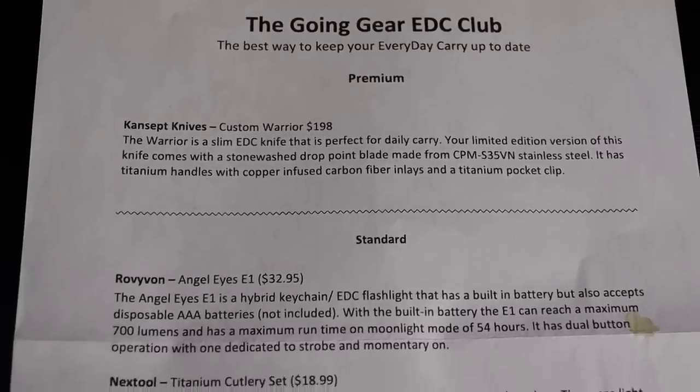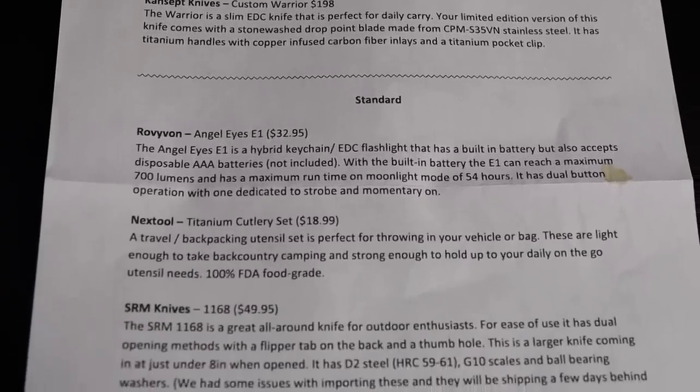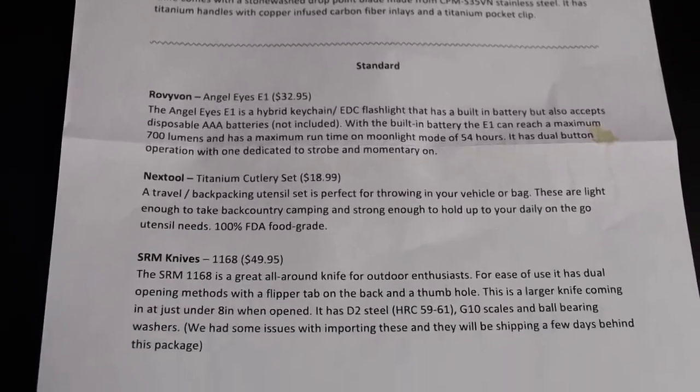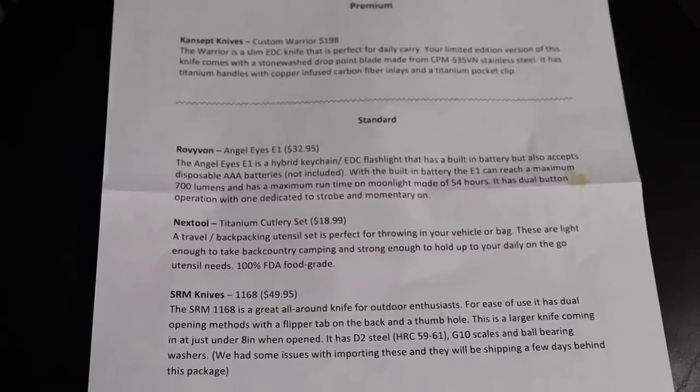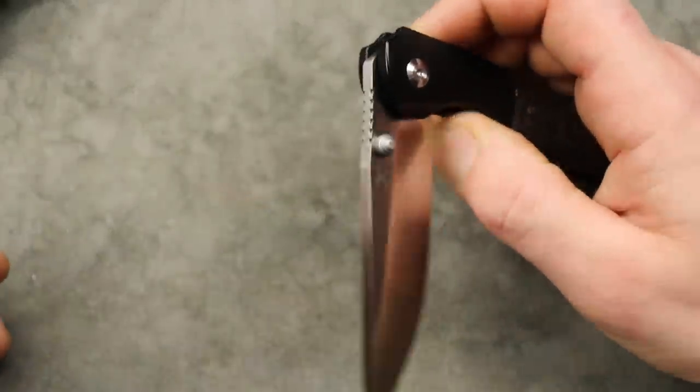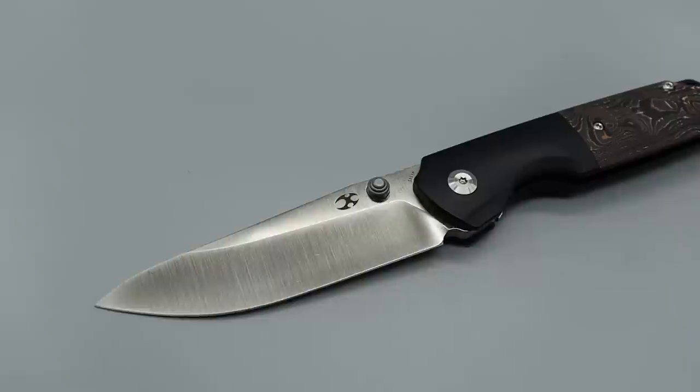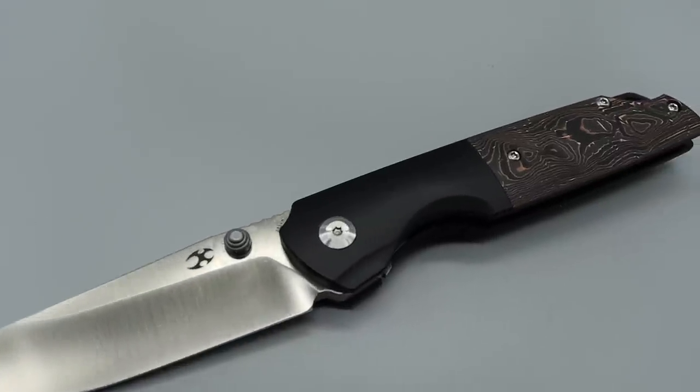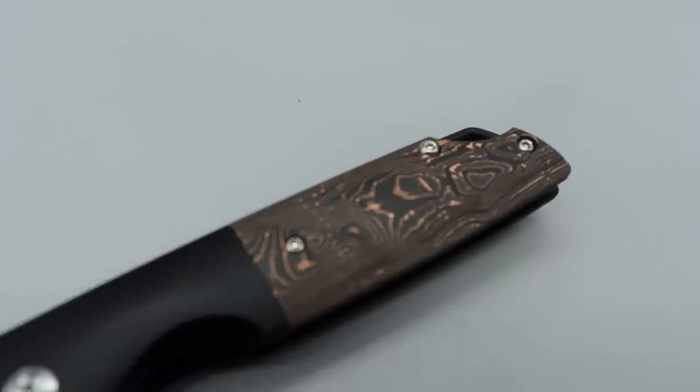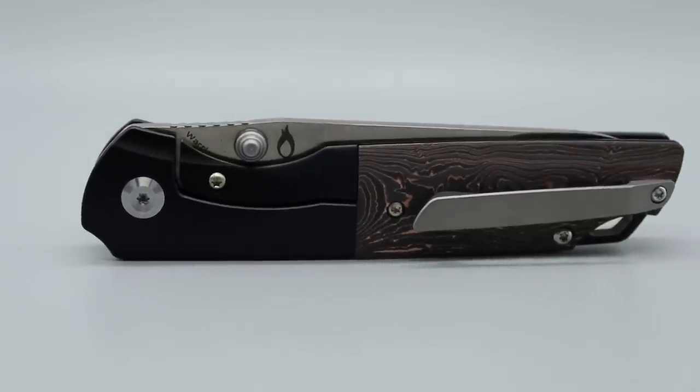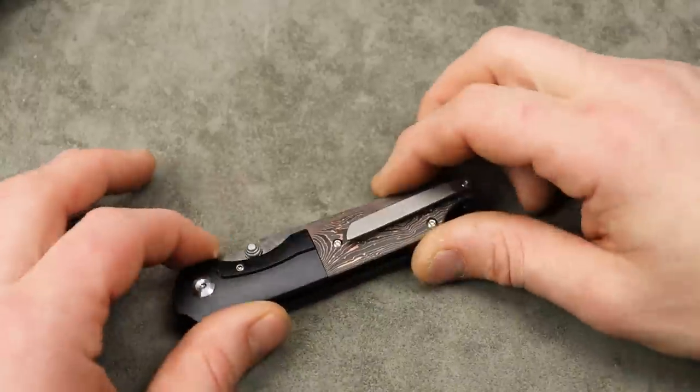So there you guys go. There is the EDC club box. Like I said, everything will be linked down in the description. If you want to get yourself EDC gear on a monthly basis, which is pretty cool because you don't pick what you want. So it just randomly shows up. So you're going to get things that you might not have thought you'd like, or maybe you'll get things you don't like, but you'll at least get to try things that you probably wouldn't have ordered. Otherwise, maybe things you never seen before, never heard before.